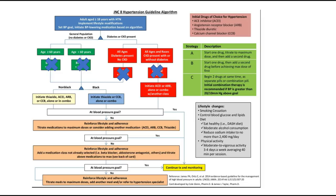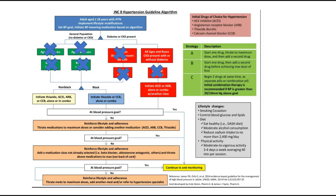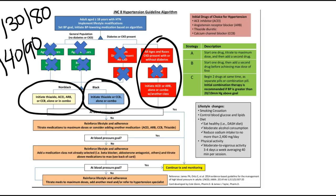Looking at the algorithm, you can group all ages together — younger than and older than 60 — and all ages with diabetes present, because they're all at the same goal of 130 over 80. The same goes for all ages and races with chronic kidney disease. Everybody is at the same goal, and that's the biggest thing when we treat hypertension: setting the goal.